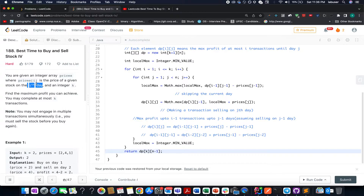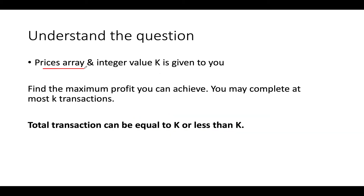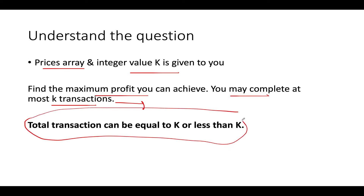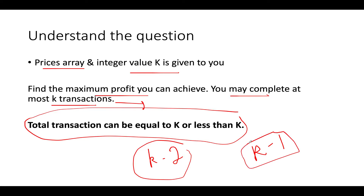The question gives us the prices array and an integer k, and we need to find the maximum profit. The upper limit of transaction count is k, which makes this really difficult because a lot of possibilities can be generated. Someone may get the best result at k-2 transactions, or k-1, or k-4 — there are many possibilities.